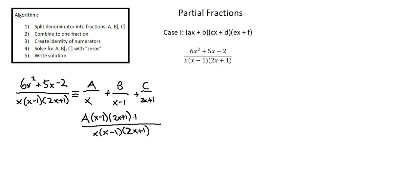Plus B, similarly B is divided by x minus 1 so we will multiply by the other two factors, B times x times 2x plus 1 and then the same with C. Plus C, C is divided by 2x plus 1 will multiply by the other two factors, C times x times x minus 1.